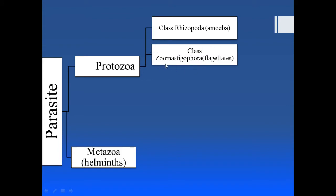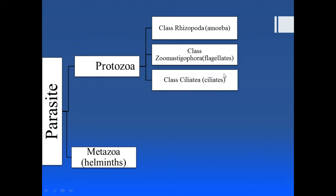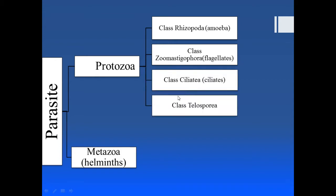The second class is Zoomastigophora, which we are studying today. These organisms move with the help of flagella. The third class is Ciliata, which move with the help of cilia, and the last is class Telospora, which don't have any organ of locomotion.